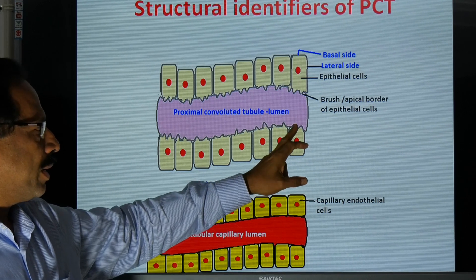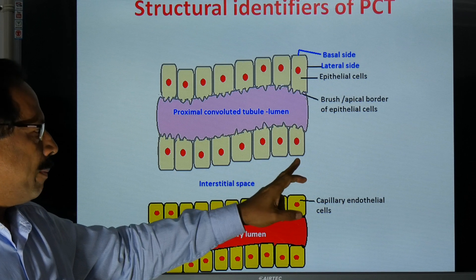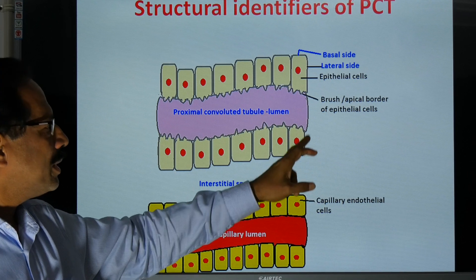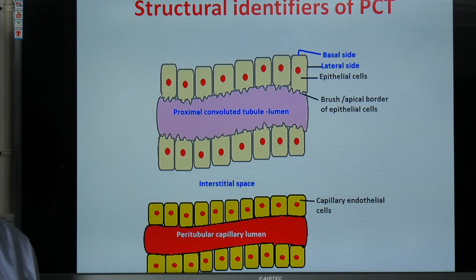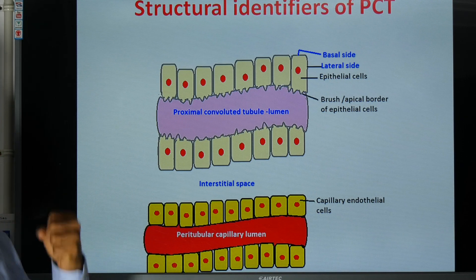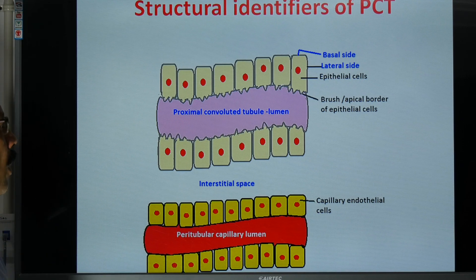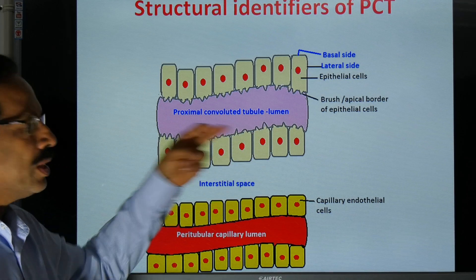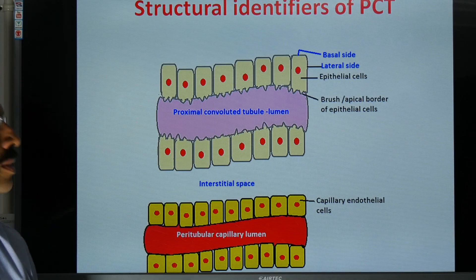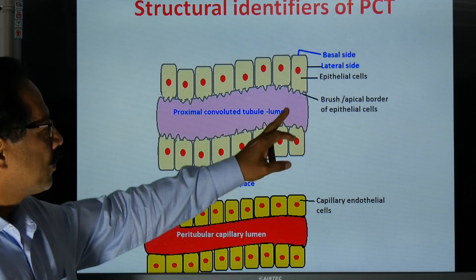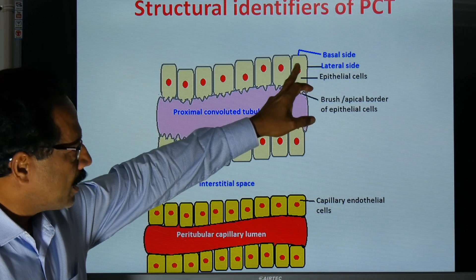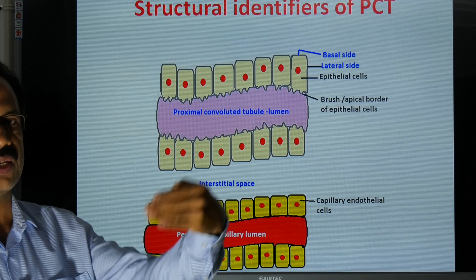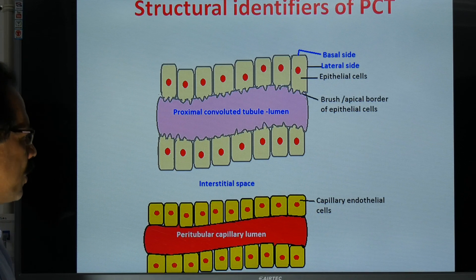The apical side or brush border, basal side, and lateral side — on all these sides there are different types of transporters which help in the reabsorption of materials from the tubular fluid and their movement from the cell to the interstitial space. These cells are quite specialized, and we will see the specialization in detail in the coming slides.